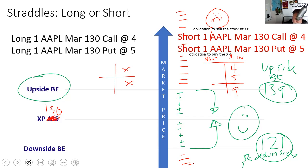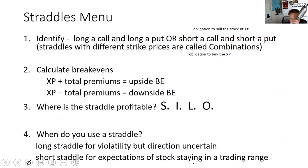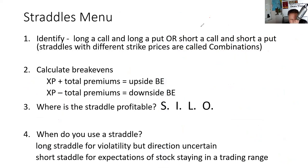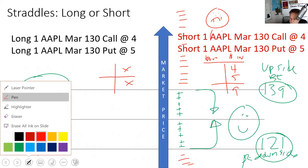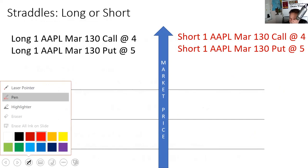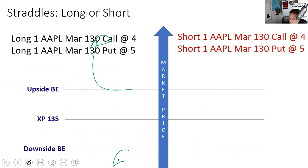Fourth test question: when would we use a short straddle? We use it when we expect the stock to stay within a trading range. Short straddles are very seductive — do you think Apple's going to stay between 121 and 139 by the third Friday in March? If so, that's a way to profit. On your test: can you identify a straddle? Can you calculate the break-evens? Call up, put down; strike price plus total premium; strike price less total premium. Where's the straddle profitable? SILO.